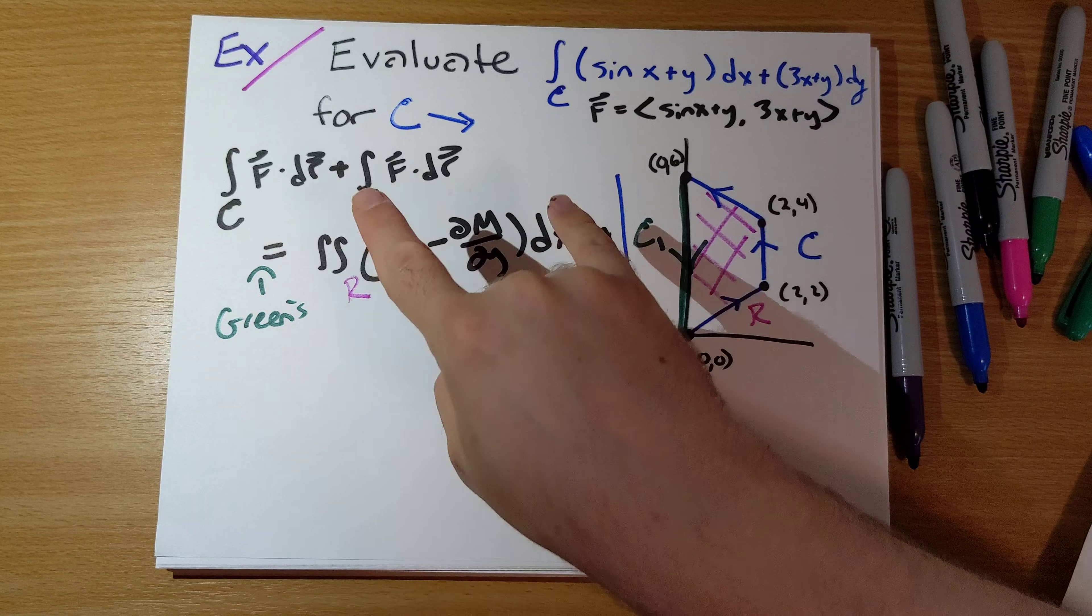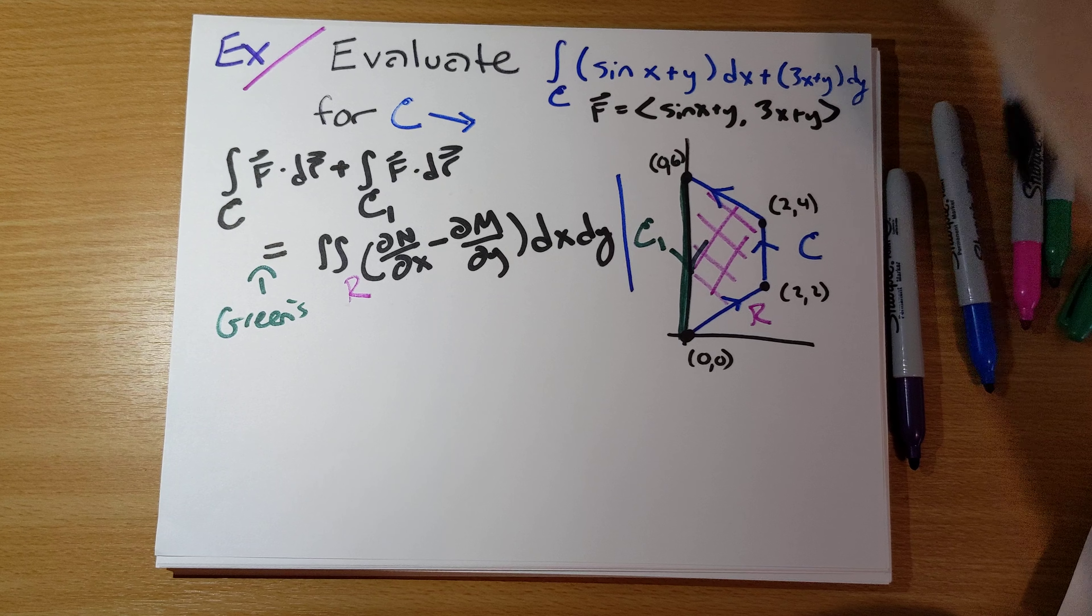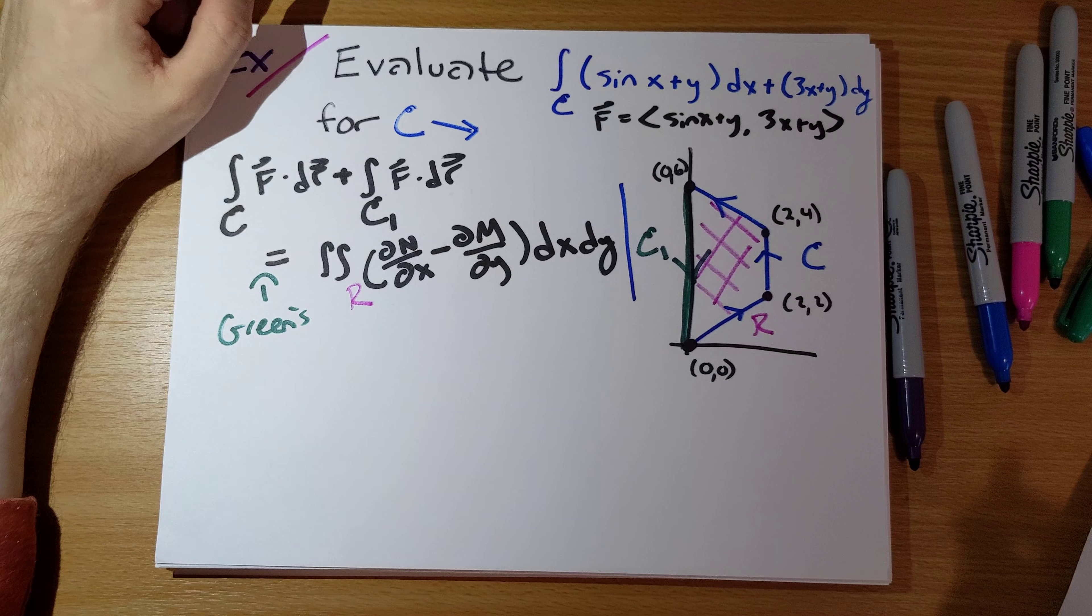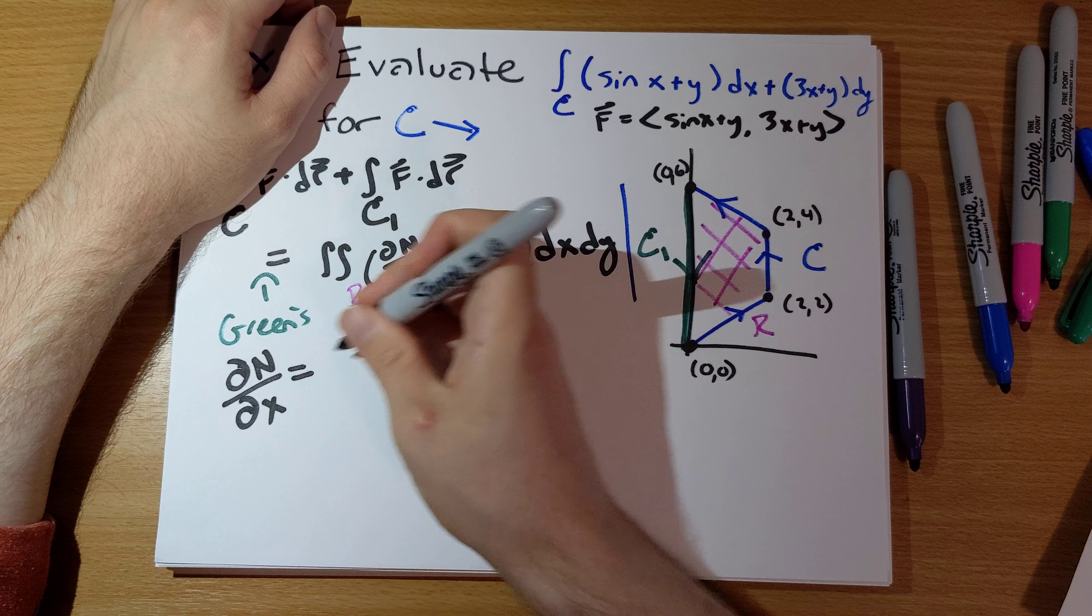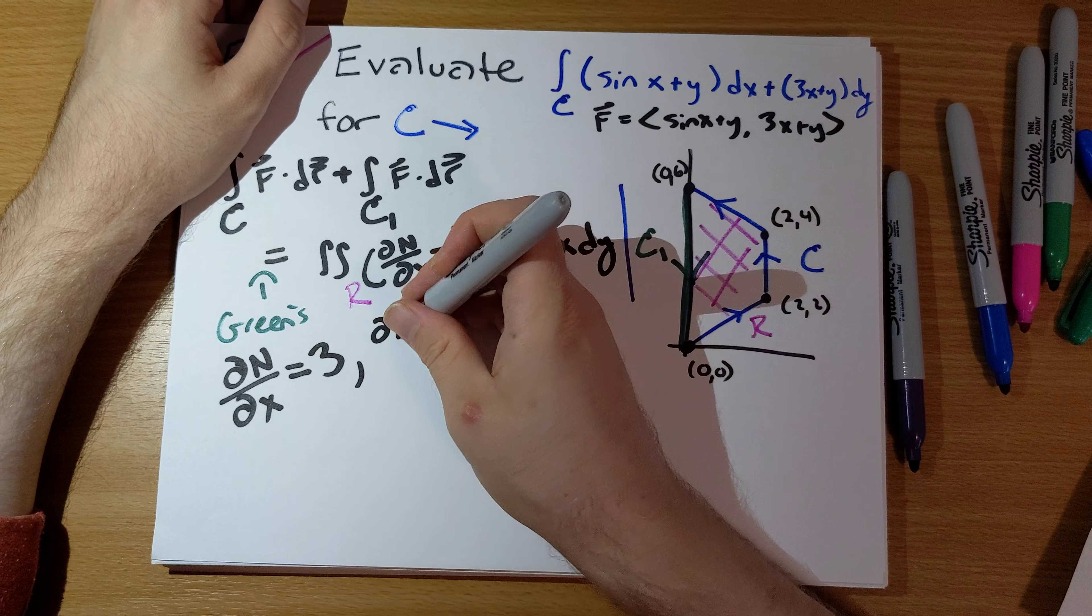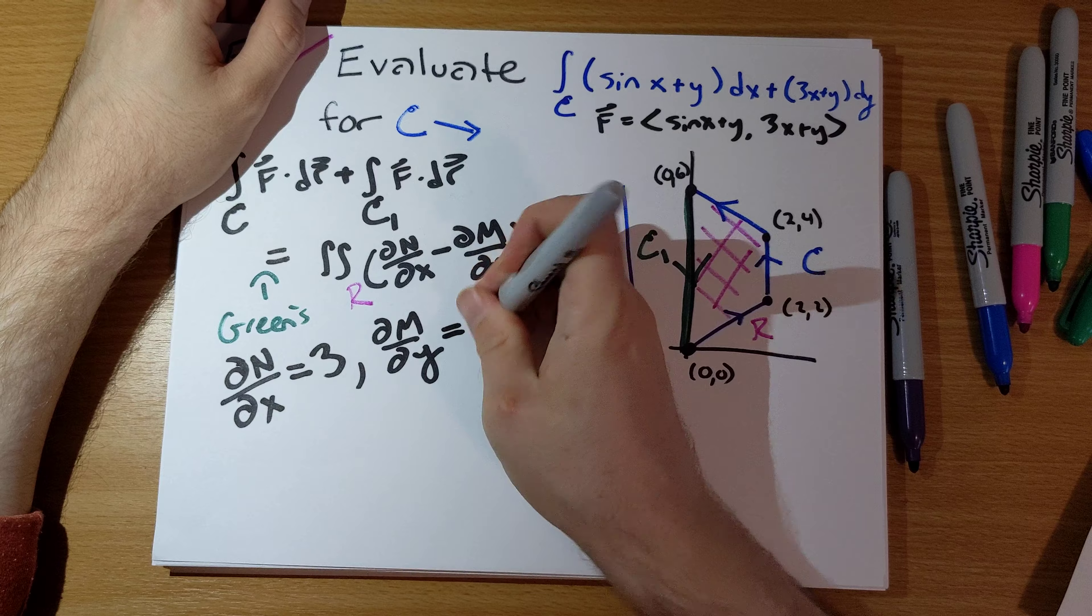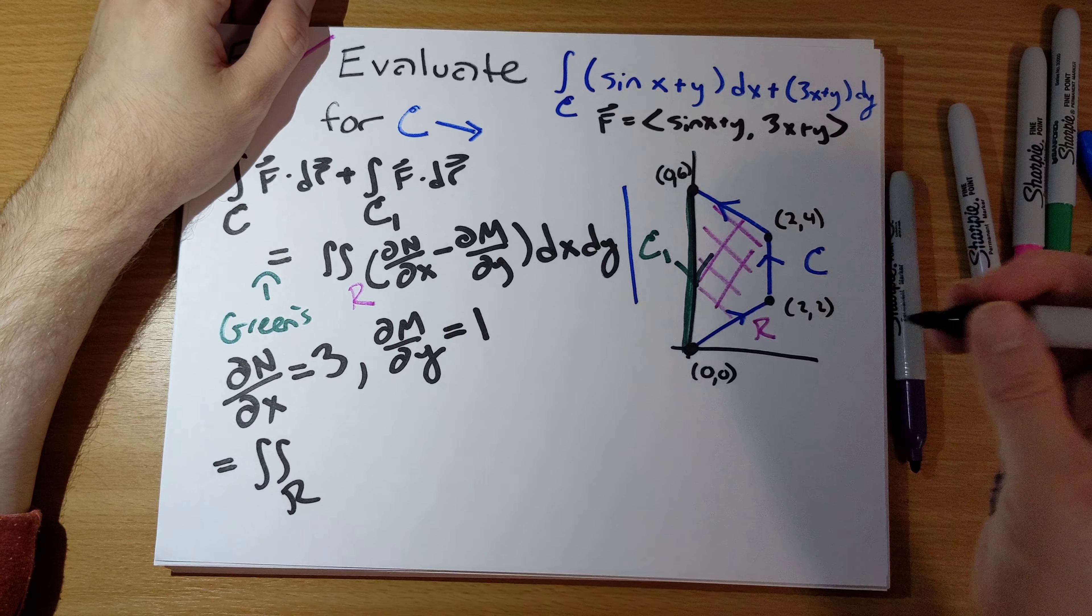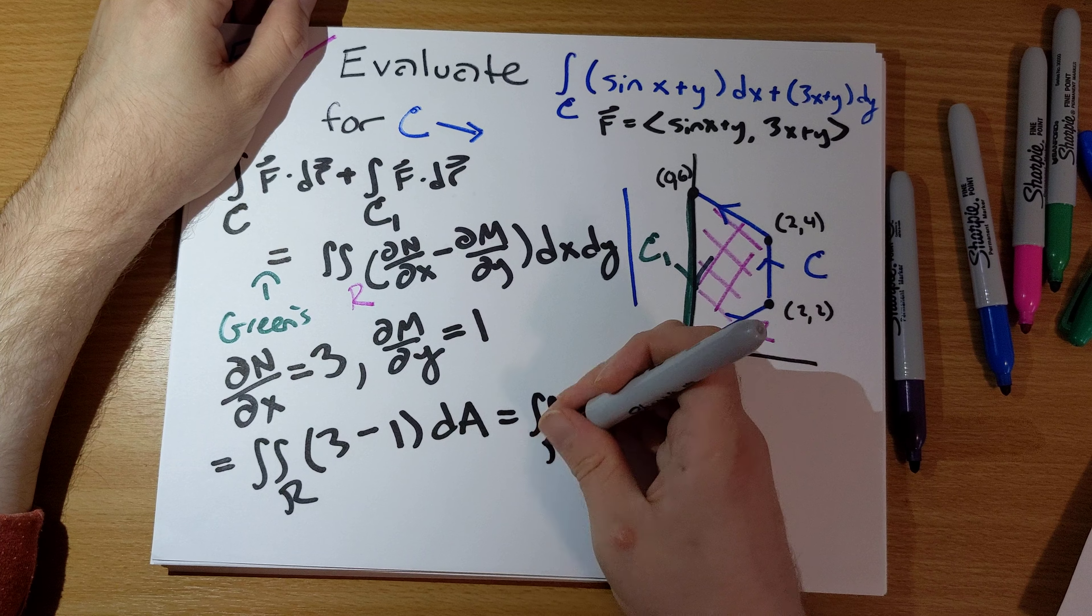Let's do our calculations. We have two calculations to do: the double integral over the trapezoid plus the integral over C1. The partial derivative of (3x+y) with respect to x is 3. The partial derivative of sine(x+y) with respect to y is 1. So we're integrating over the trapezoid 3-1 dA, which is 2 dA.